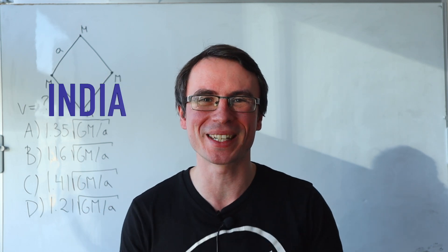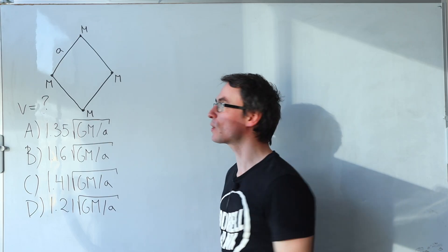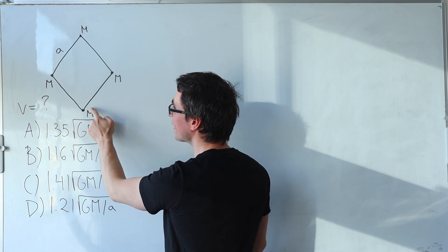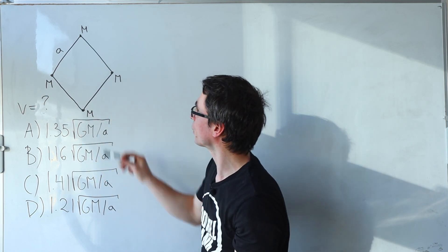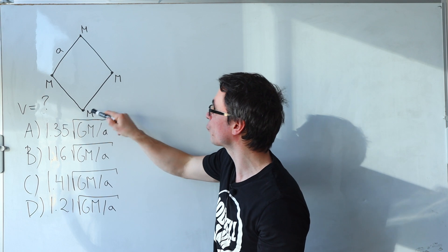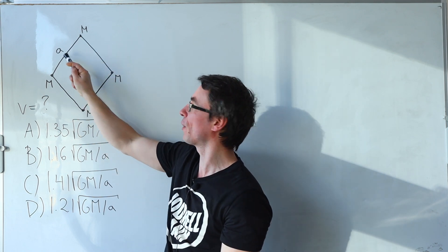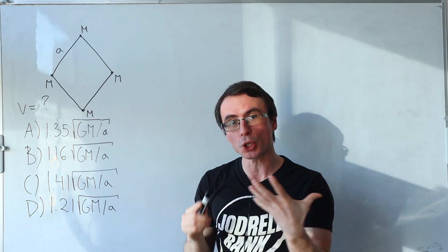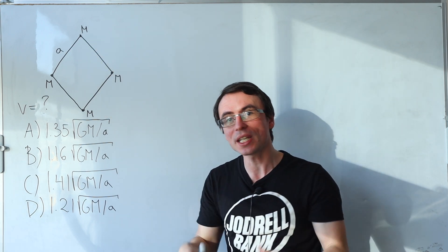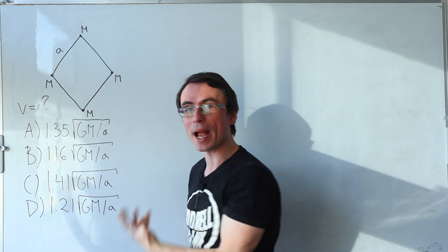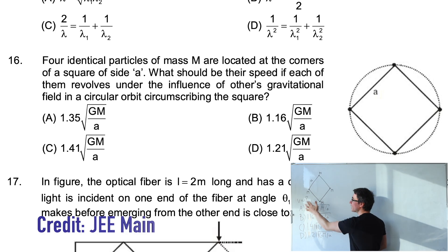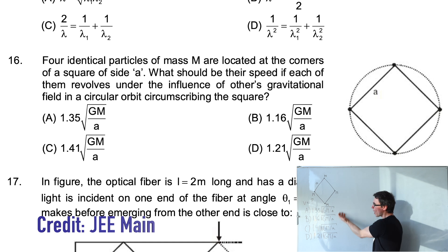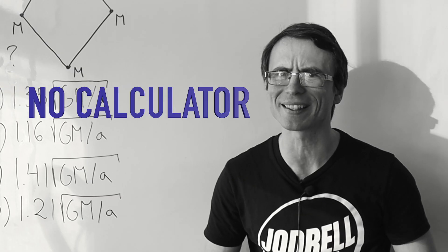Let's solve a physics exam question from India. We have a square with four masses m that are equal, positioned at each of those vertices of the square of side a. Now if they're performing circular motion about the center only under the influence of their own gravity, what speed would they be moving at? You have the options here but please bear in mind that no calculators allowed.